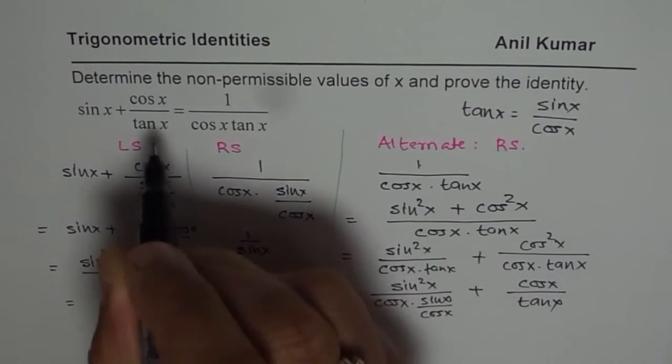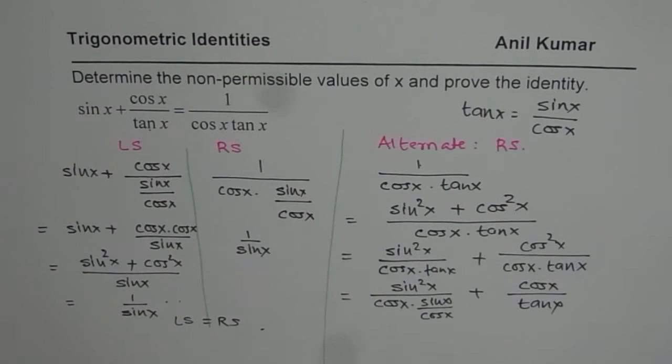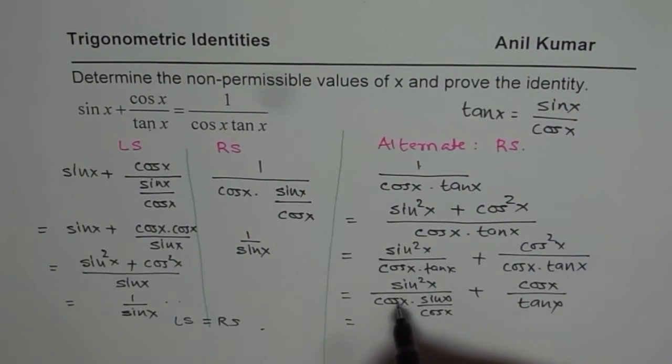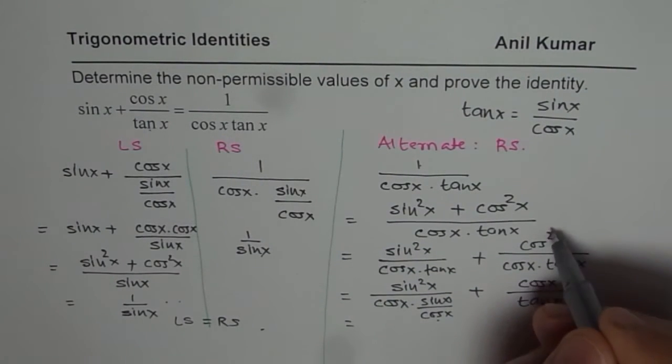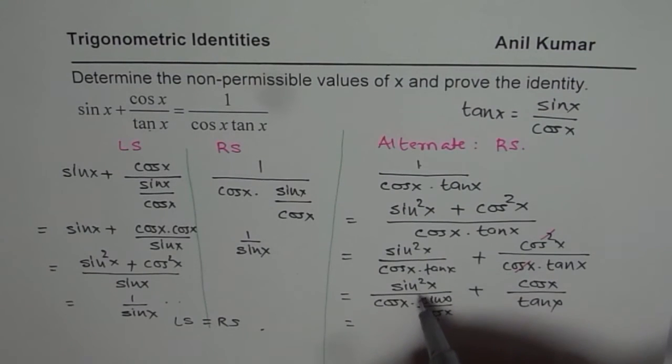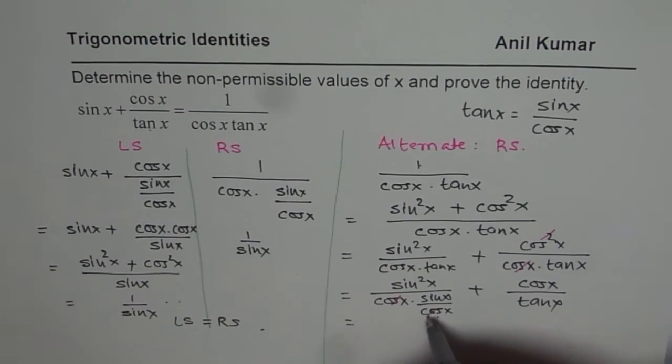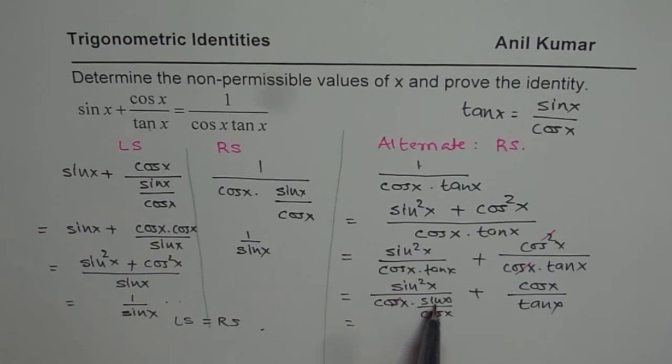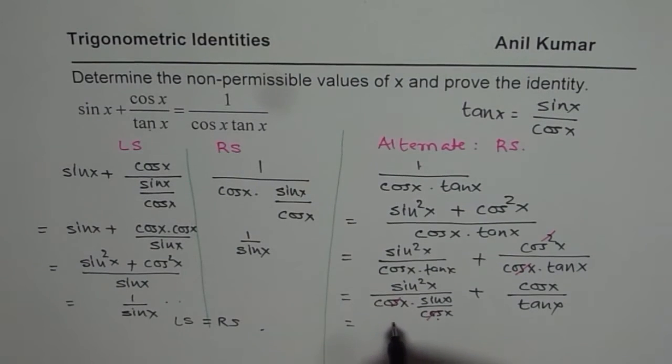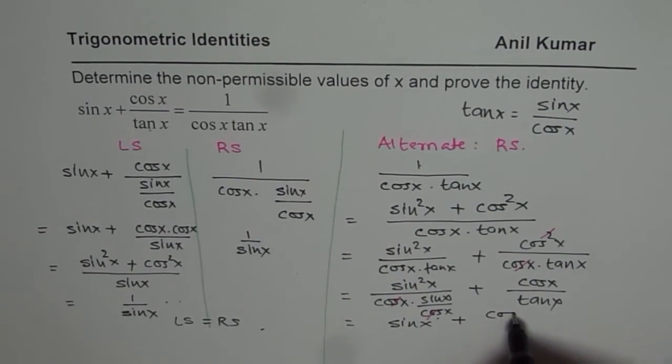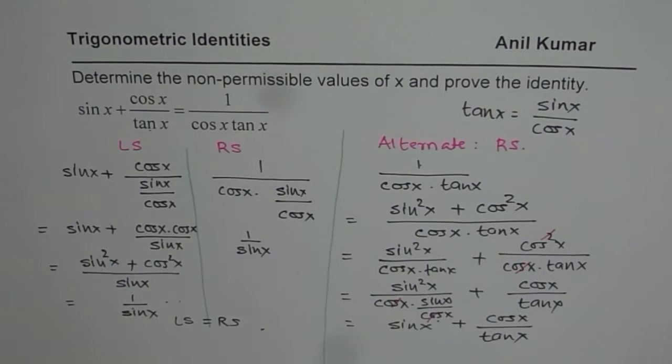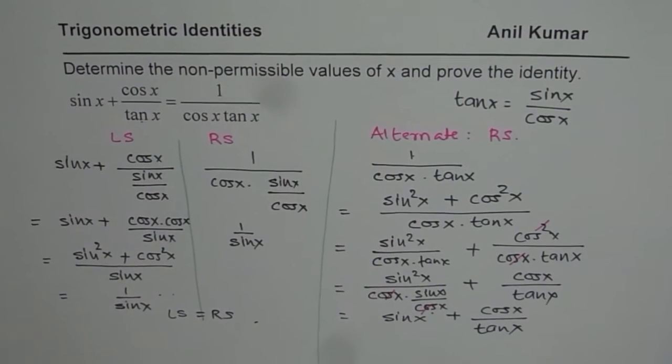So we got one of the terms, and now in the next step, we also get this term. So cos x and cos x cancel out. So here we cancel these two. Now we can cancel cos x and cos x. So you have sin square x over sin x, which is sin x plus cos x over tan x. So that is how you can prove this particular identity.